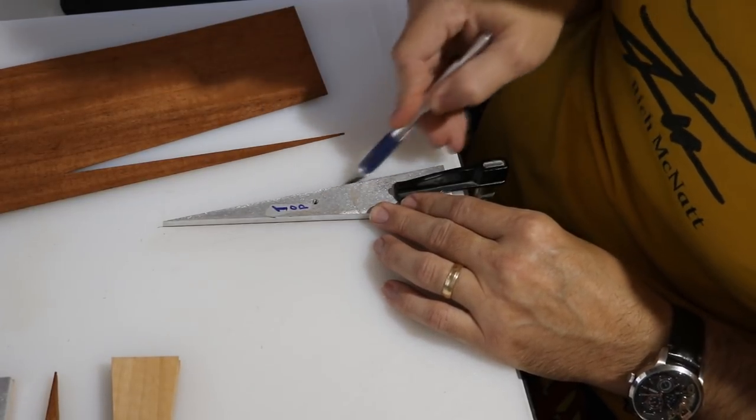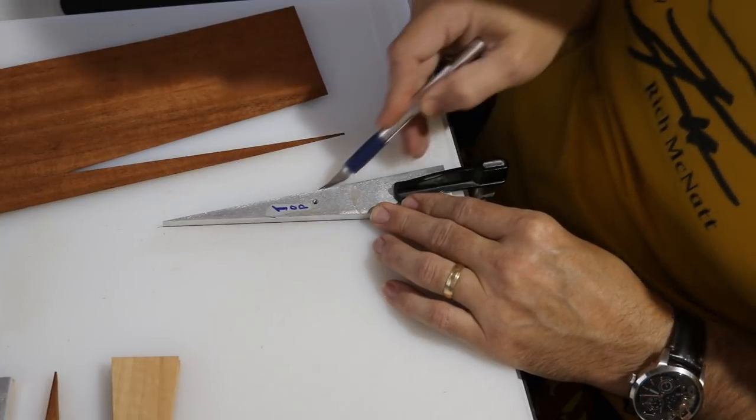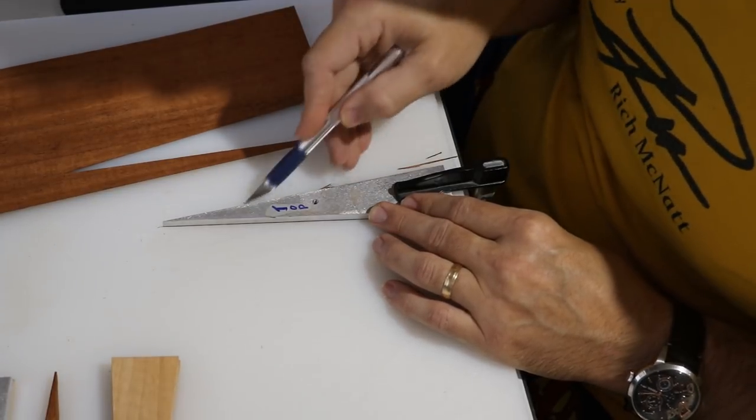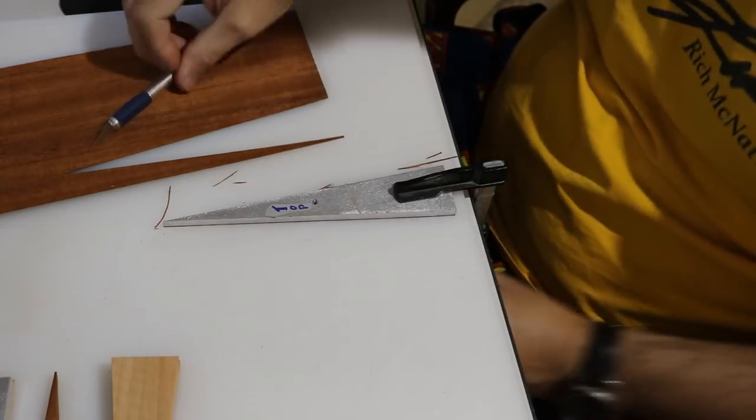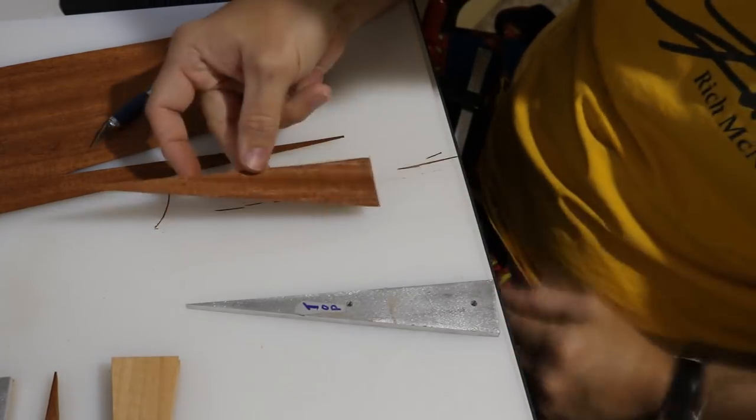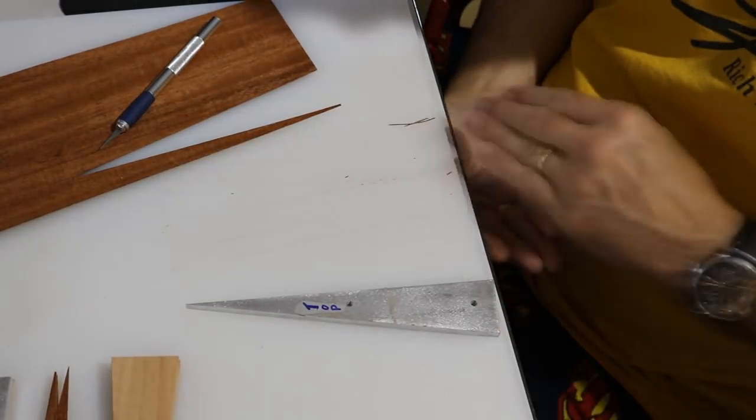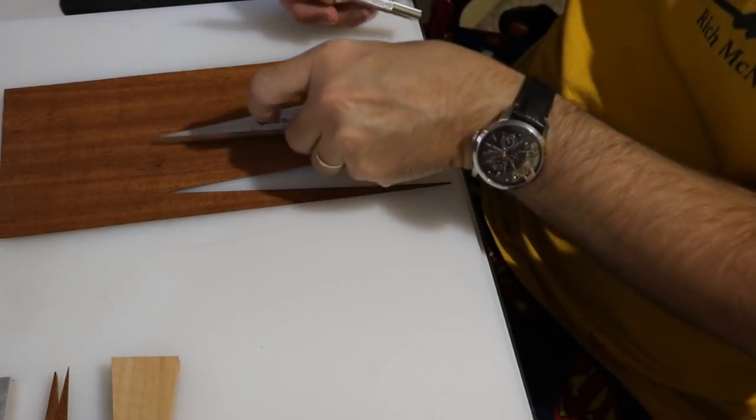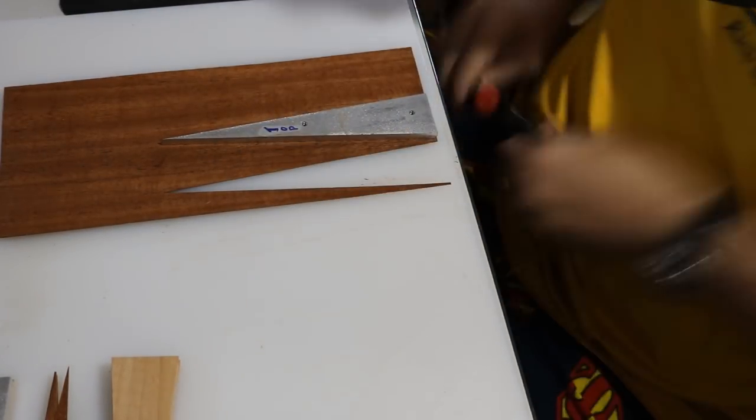I did this in my living room at the computer desk because it was cold out at the time. So I just set up a cutting board and put the aluminum triangle on the veneer.